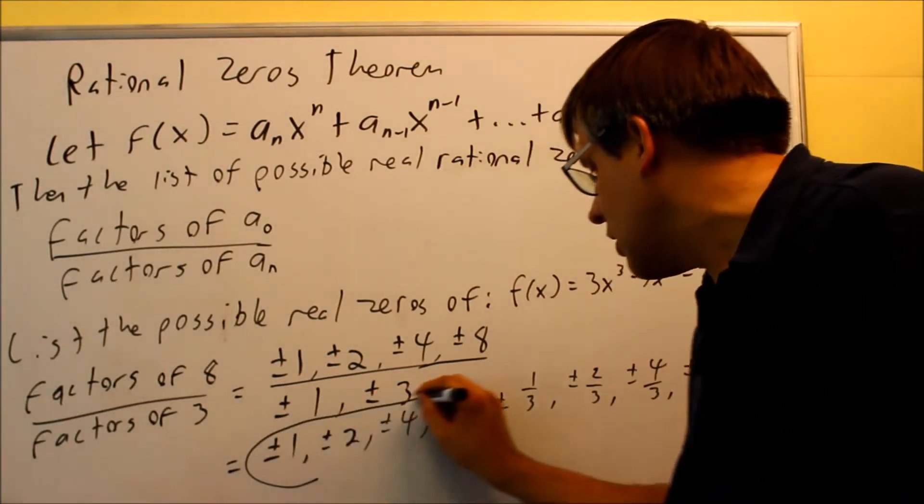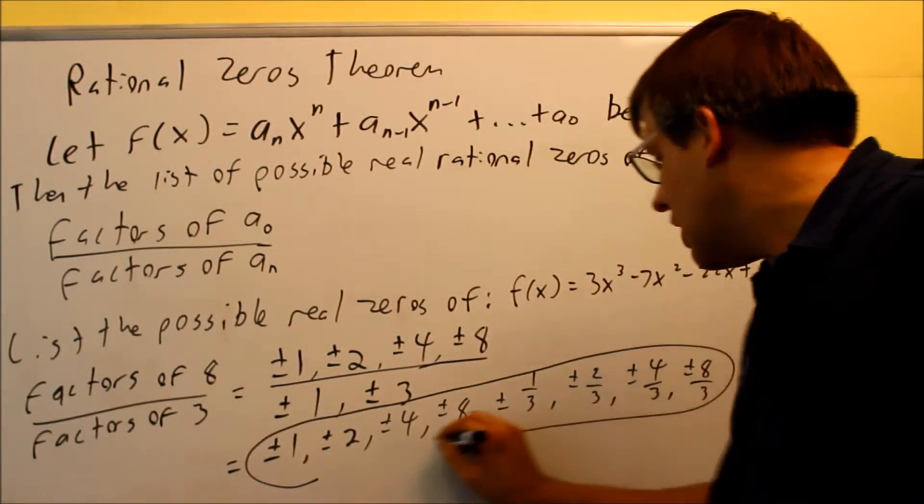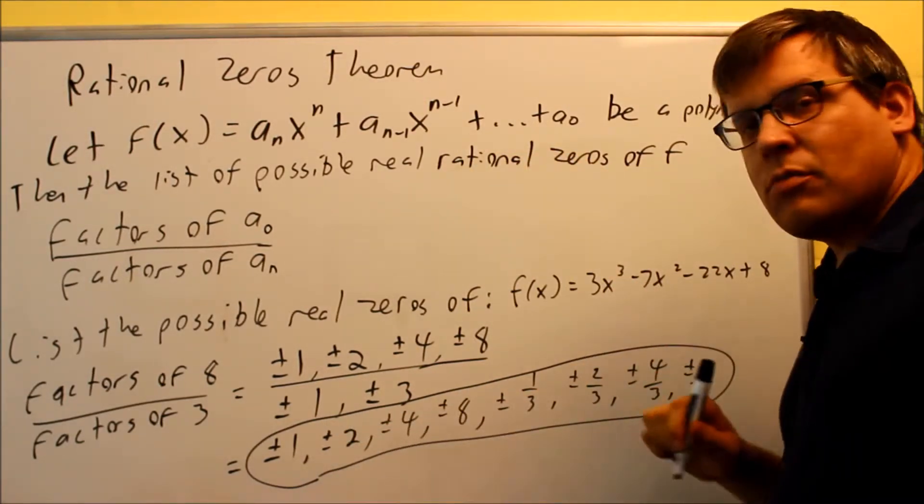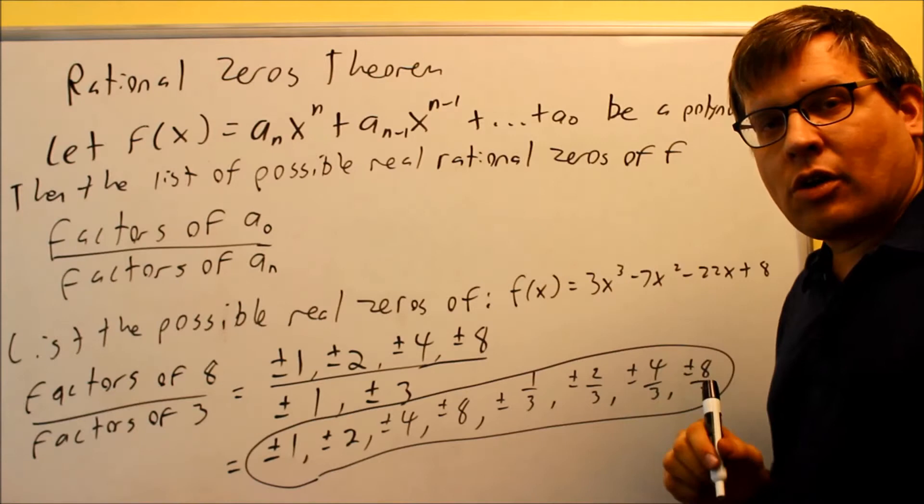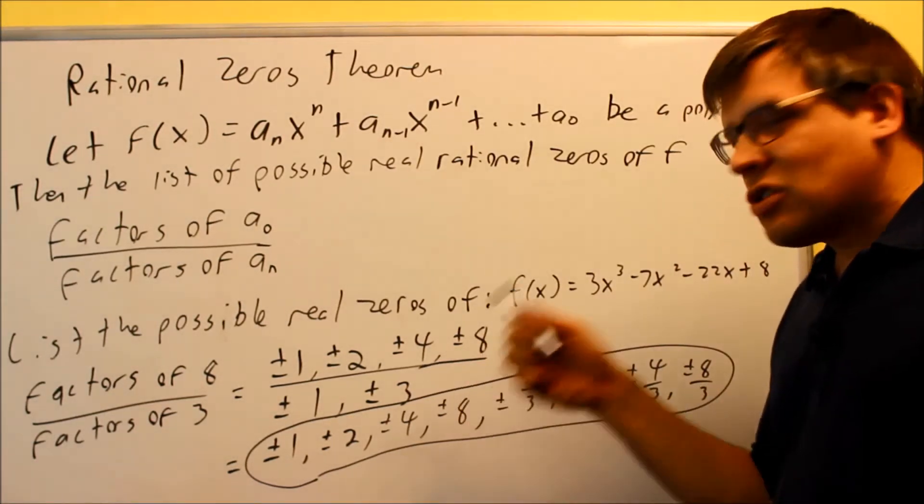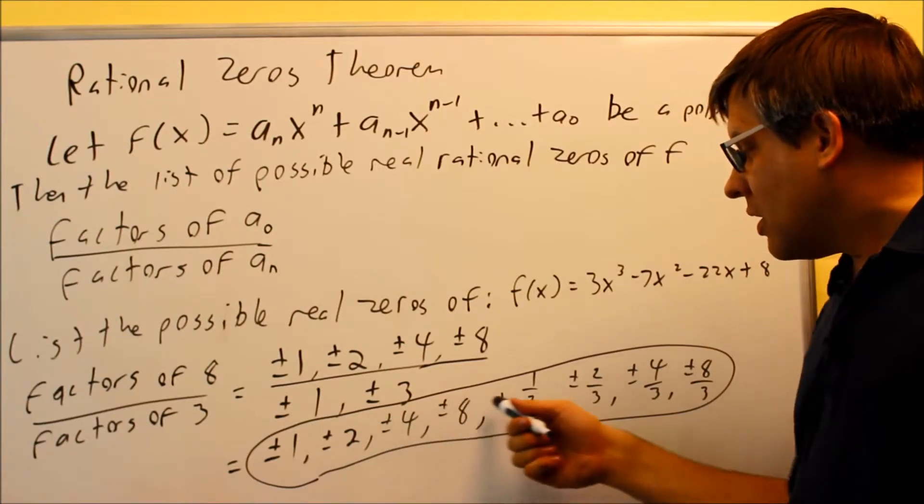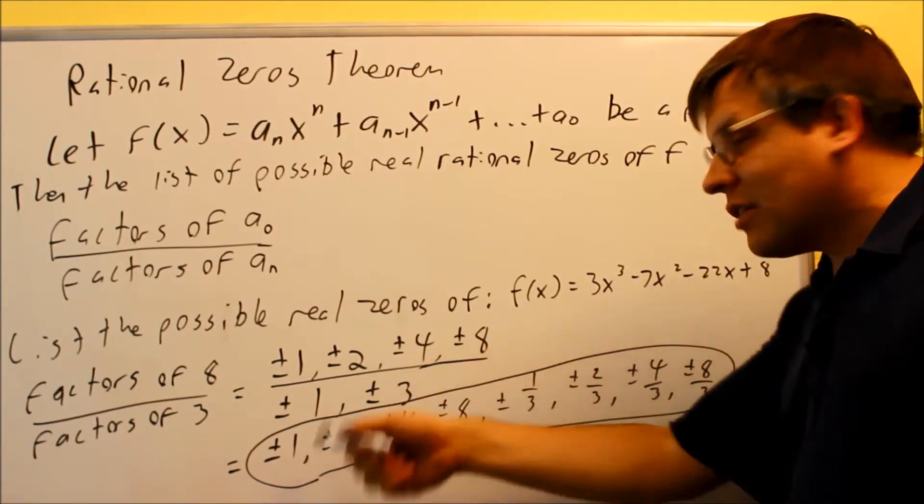This whole list right here, this is going to be the answer to this question. They want a list, and so this is a list of all of them. Now what that means is if I take a look at the graph itself and I see where it crosses, you'll see that the graph is actually going to cross at one of the numbers here on this list.